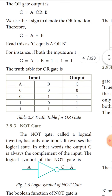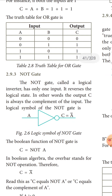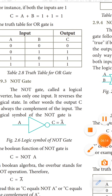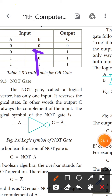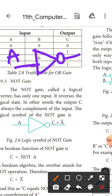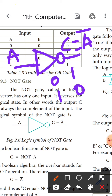The NOT gate inverts the input value. To draw the NOT gate symbol, you draw a triangle with a bubble at the output side. The output C equals A bar. If input A is 0, the output is 1; if input A is 1, the output is 0.